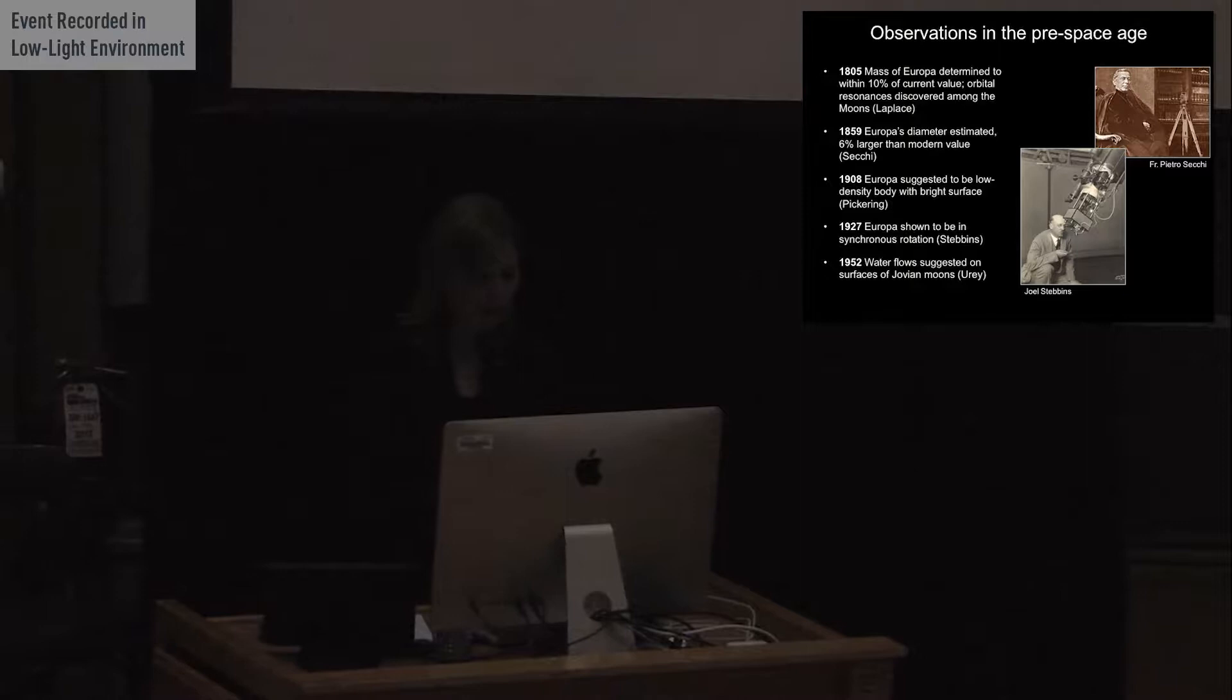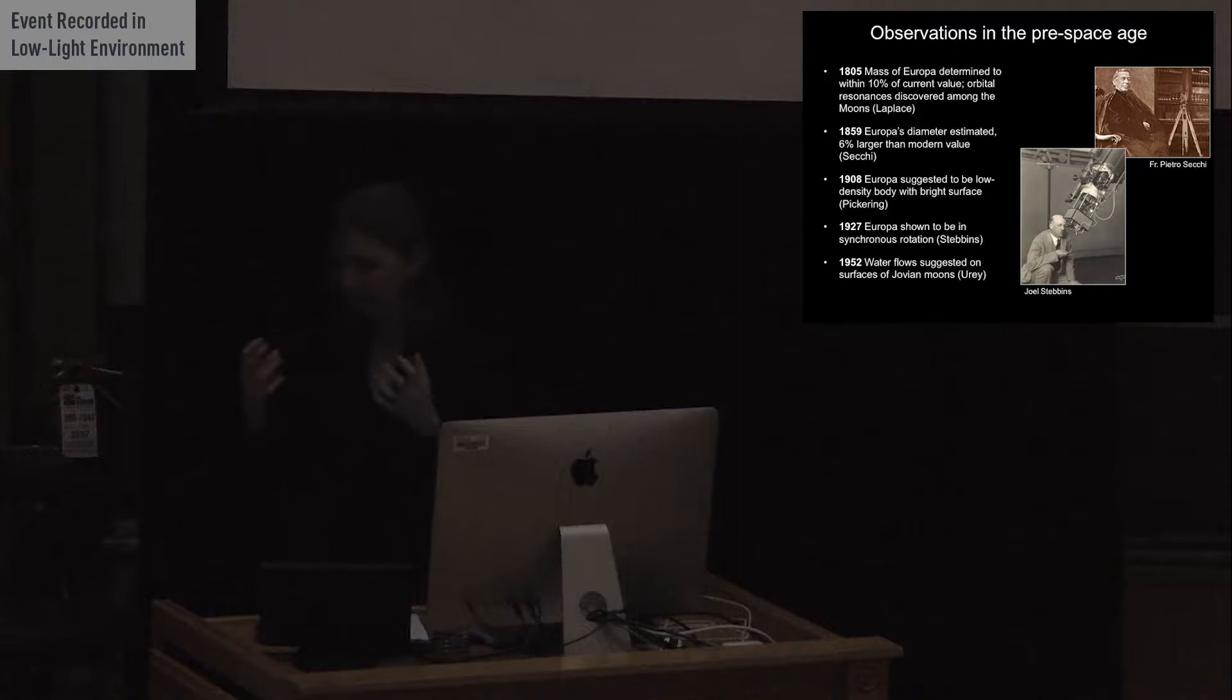In 1927, the astronomer Joel Stebbins found that Europa is trapped in synchronous rotation. That means the same face is pointing towards Jupiter at all times. So it's similar to our moon with the same face pointing towards the Earth all the time. And then in 1952, Howard Urey, who was a fantastic chemist...